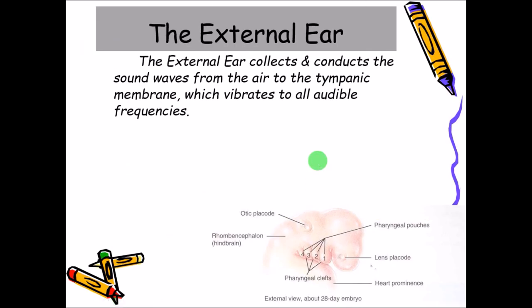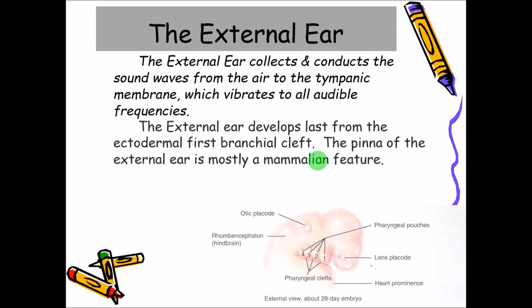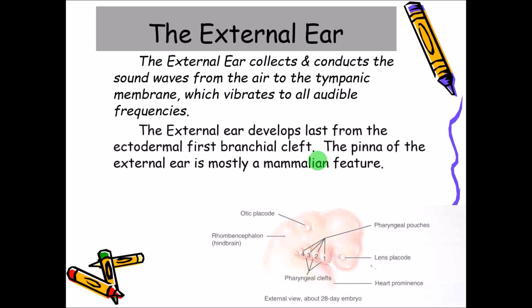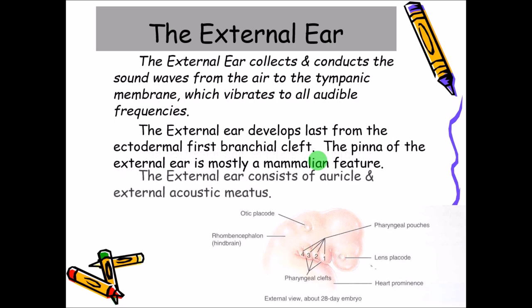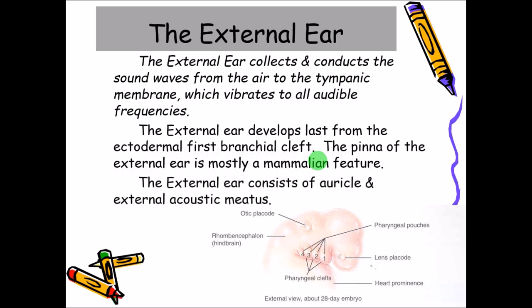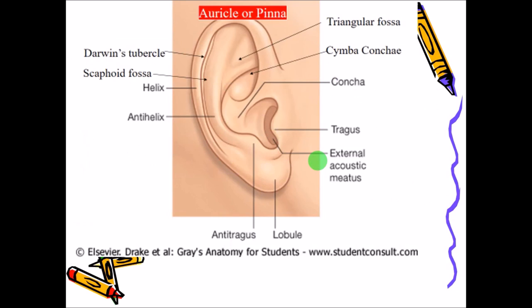The external ear collects and conducts sound waves from the air to the tympanic membrane, which helps in the vibration of all audible frequencies. The external ear develops from the ectoderm of the first branchial cleft and the pinna is mostly a mammalian feature. The external ear consists of two parts: the auricle and the external acoustic meatus.